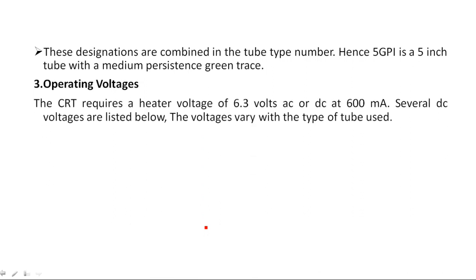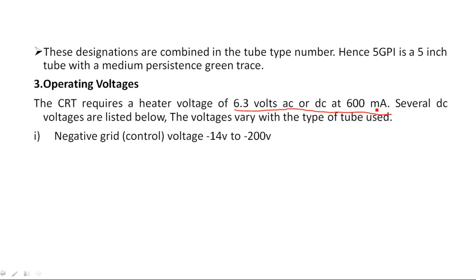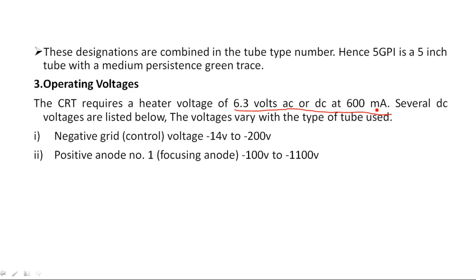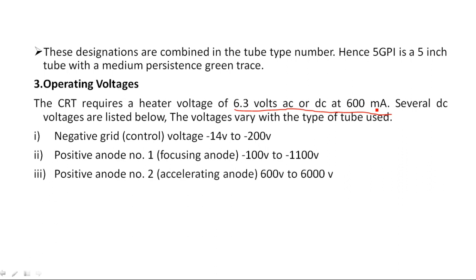Taking the example 5GP1: this means a 5-inch CRT screen with green color and medium persistence. Now for operating voltages: the electron gun heater requires 6.3 volts AC or DC at 600 milliamperes. Several DC voltages are also required: a negative grid control voltage of minus 14 volts to minus 200 volts, and positive anode number one (focusing anode) from minus 100 to minus 1100 volts.